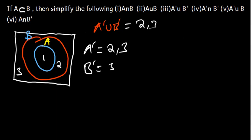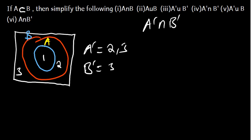We have Part 4, which is A complement intersection B complement. A complement is 2 and 3. B complement is just 3. We want to see the numbers which are found both in A complement and B complement — that is just 3. But 3 is the same as B complement. So, A complement intersection B complement is just basically B complement.